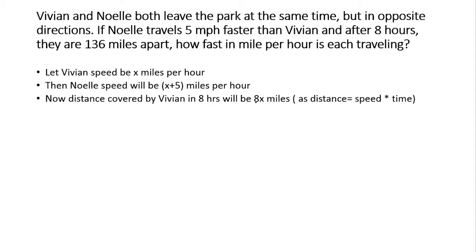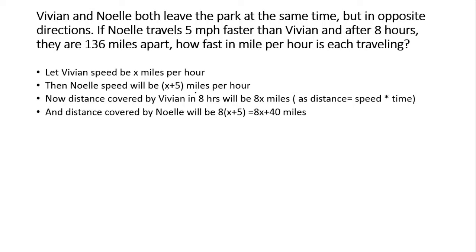Now let us find the total distance covered by Noel. The speed of Noel is x plus 5 miles per hour, and in eight hours Noel is going to cover the distance 8(x + 5), which equals 8x plus 40 miles.